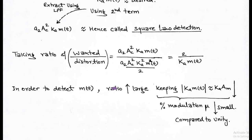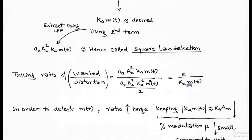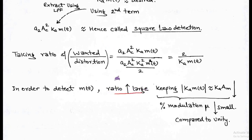We take the ratio of the wanted term to the distortion term. The wanted term is a2·Ac²·ka·m(t), and the distortion is a2·Ac²·ka²·m²(t)/2. After calculating, the ratio is 2 / [ka·m(t)]. Here, ka·m(t) is the modulation index μ, obtained as |ka·m(t)| = ka·Am, where Am is the amplitude of m(t). In order to detect m(t), this ratio must be large, meaning |ka·m(t)| = ka·Am should be small — that is, percentage modulation μ must be much less than unity.